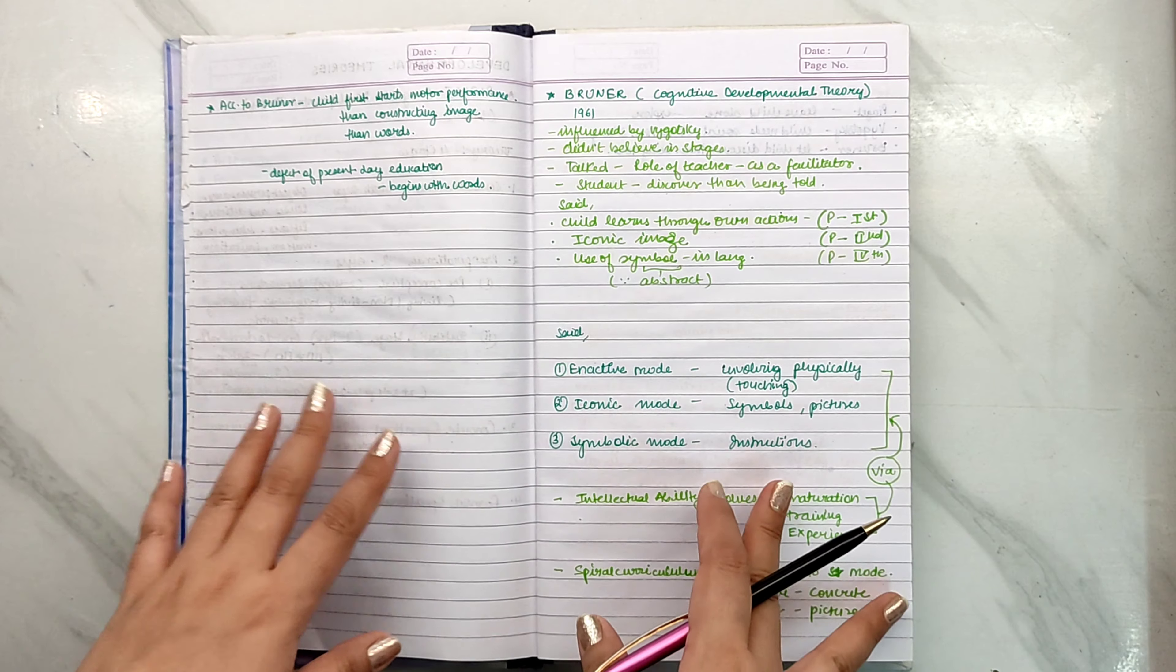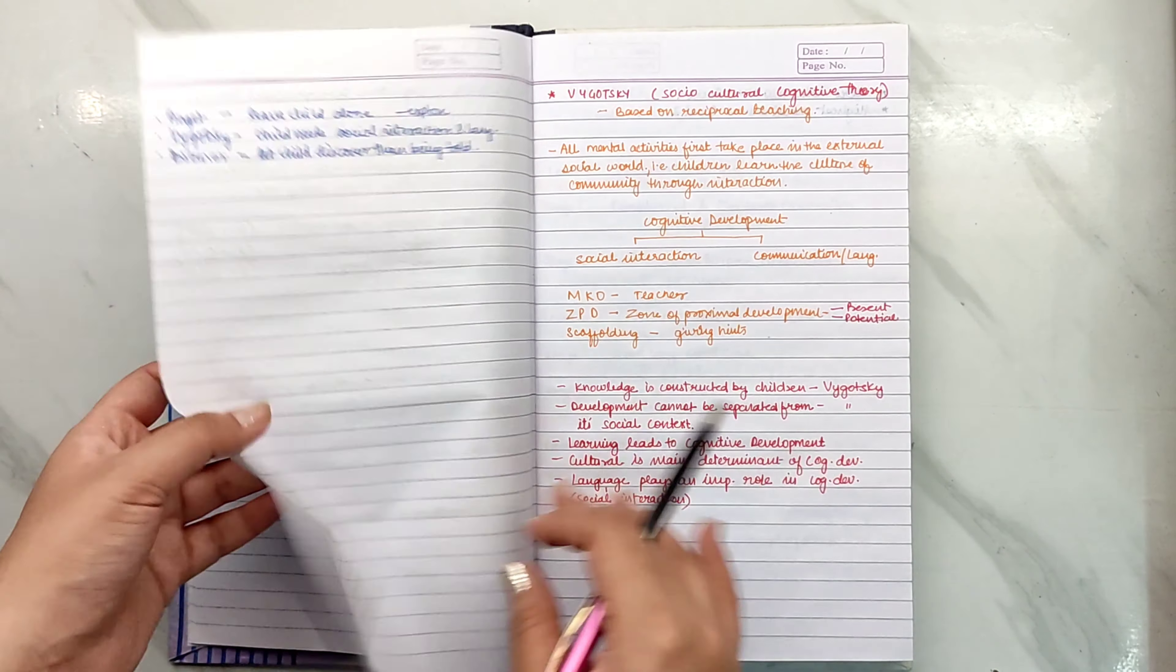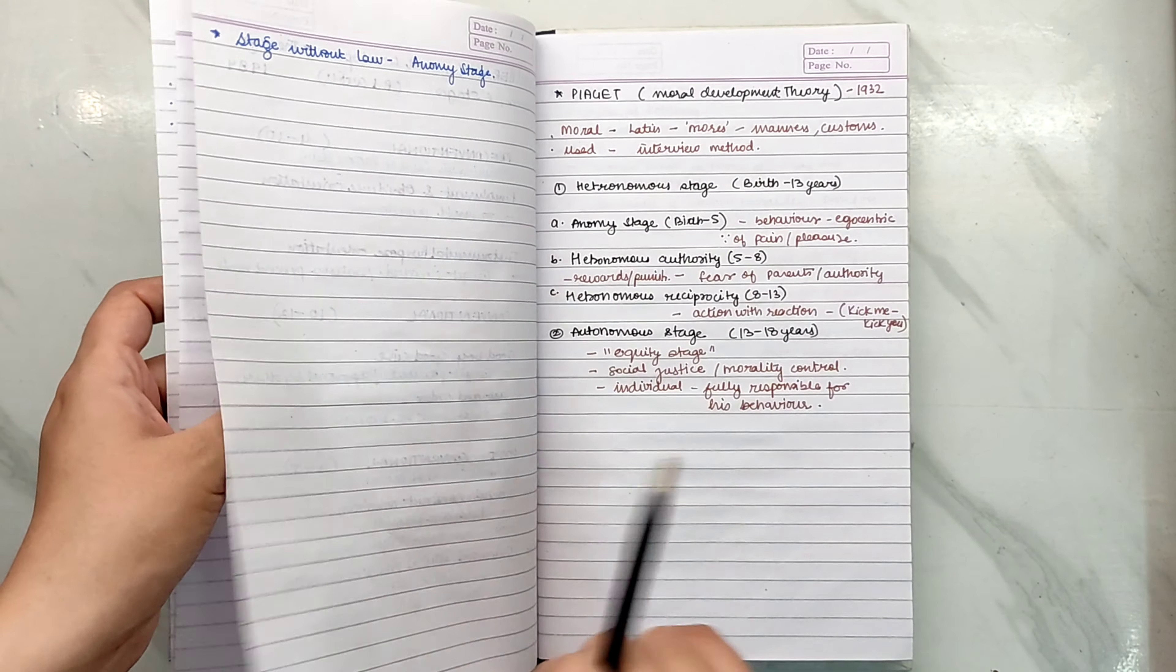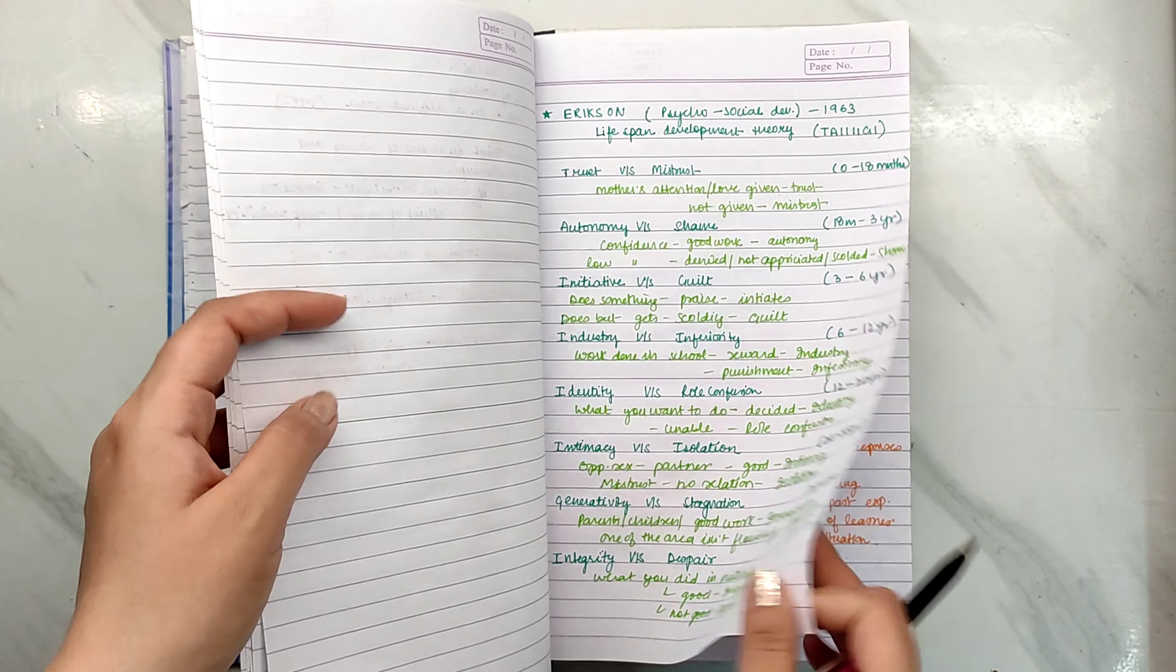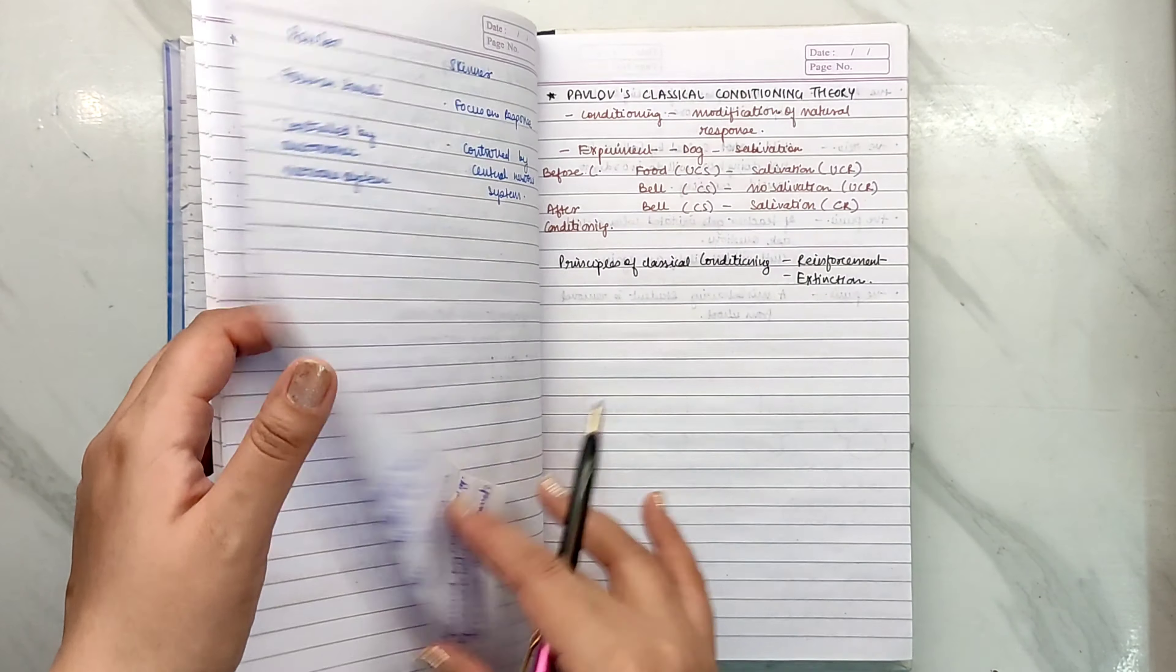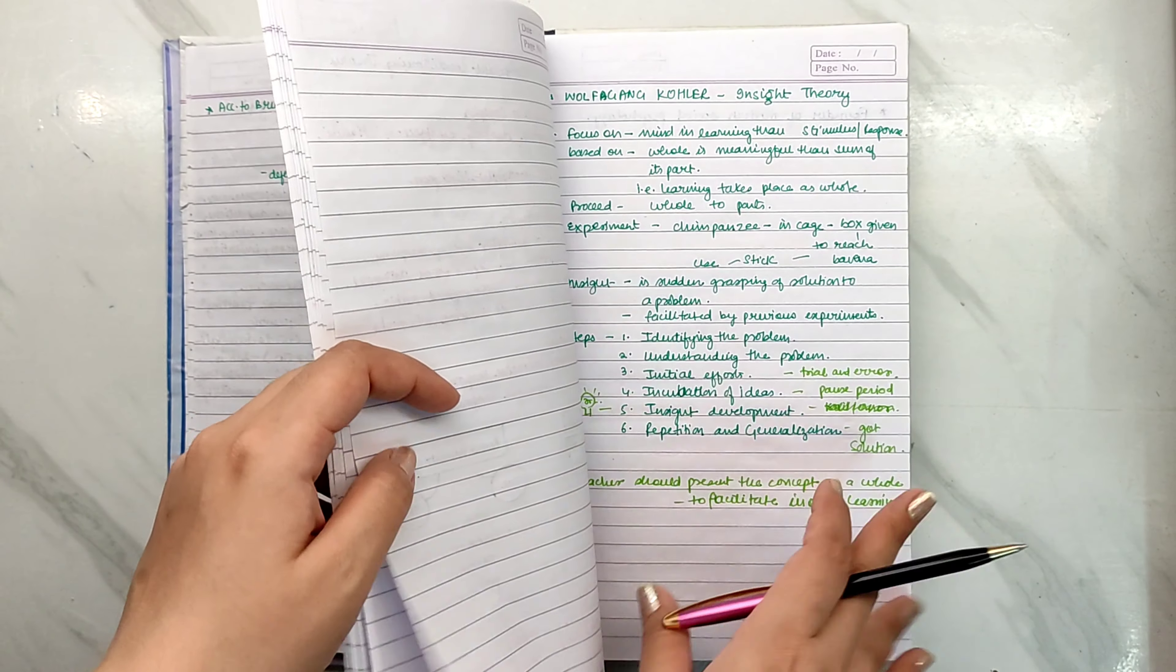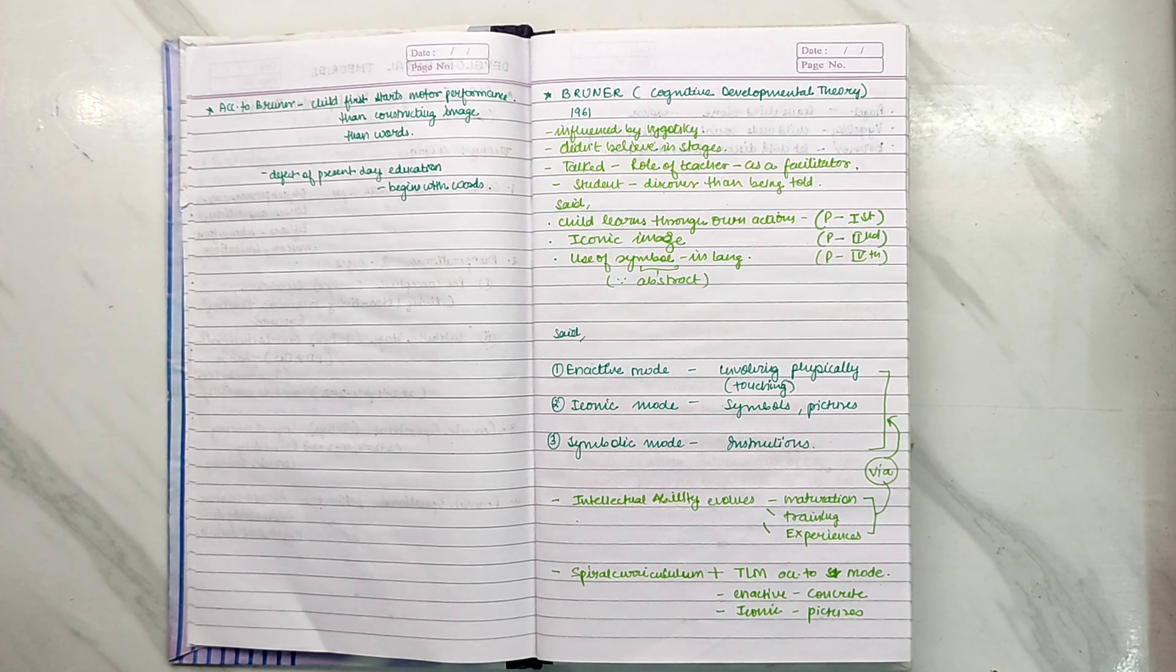First of all, I'm going to do theories like Piaget, Bruner, Vygotsky, Kohlberg, Piaget's Moral Development, Carol Gilligan's Theory, Erikson's, Thorndike, Watson, Pavlov, Skinner, Wolfgang, etc. And after all, we will read all the facts, the Delors Commission.